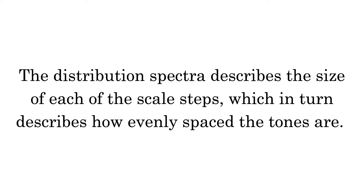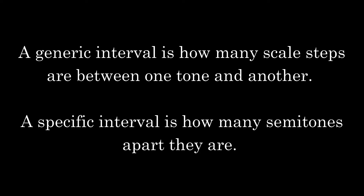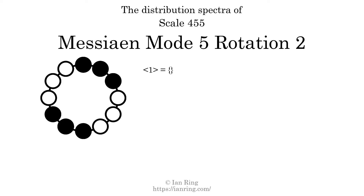The distribution spectra describes the size of each of the scale steps, which in turn describes how evenly spaced the tones are. A generic interval is how many scale steps are between one tone and another. A specific interval is how many semitones apart they are. The generic interval of 1 scale step comes in 2 different specific interval sizes: 1 semitone and 4 semitones. The spectrum width of this generic interval is the highest, 4, minus the lowest, 1, which equals 3.